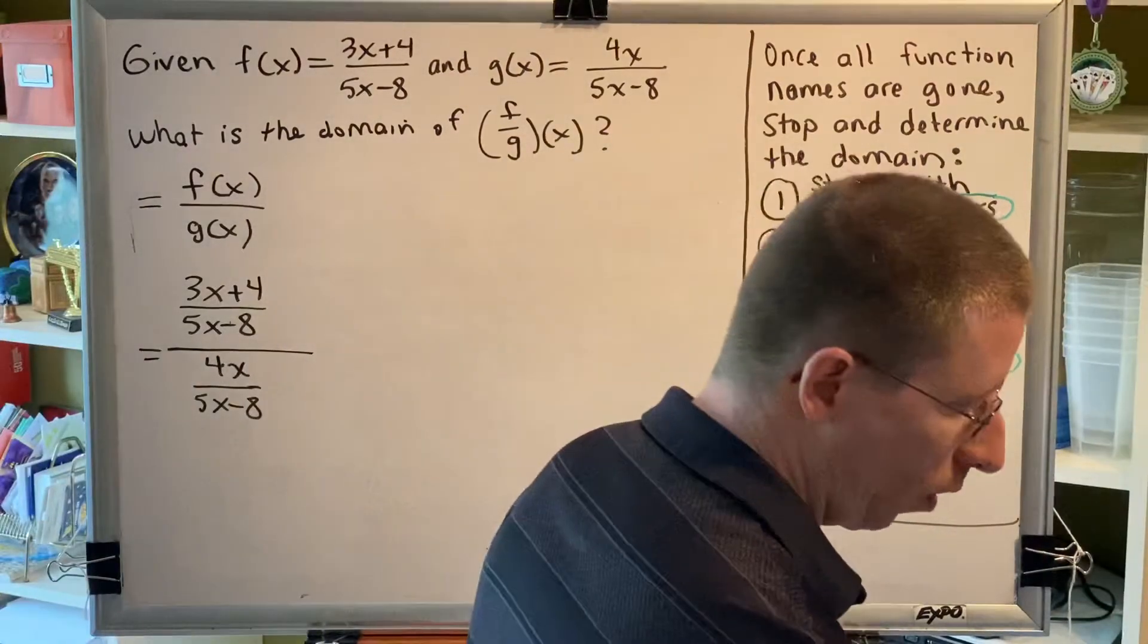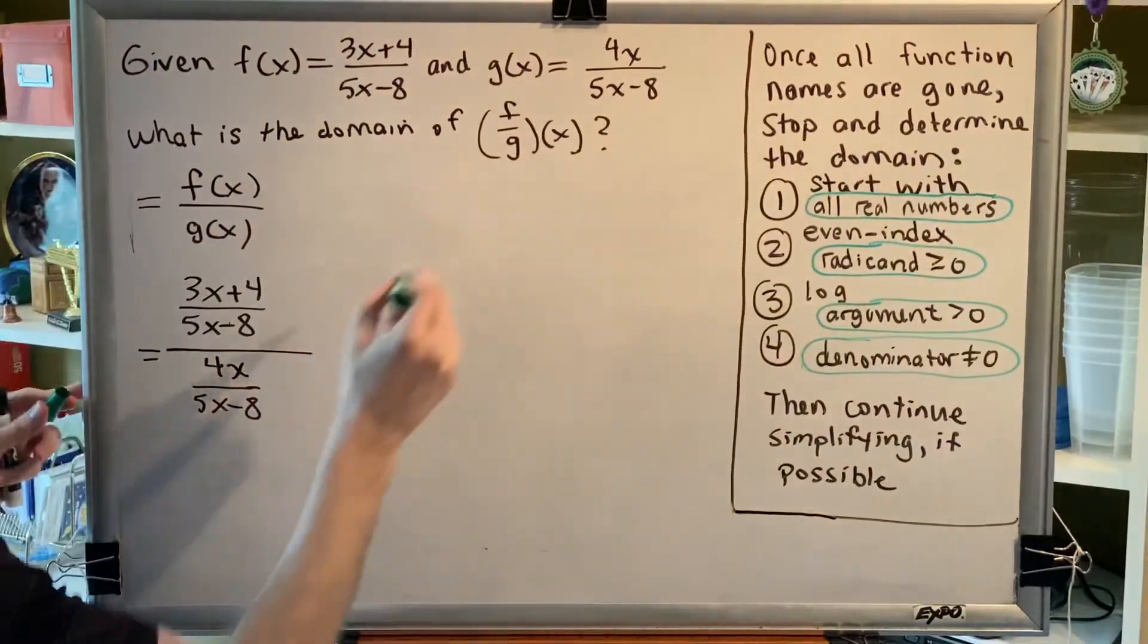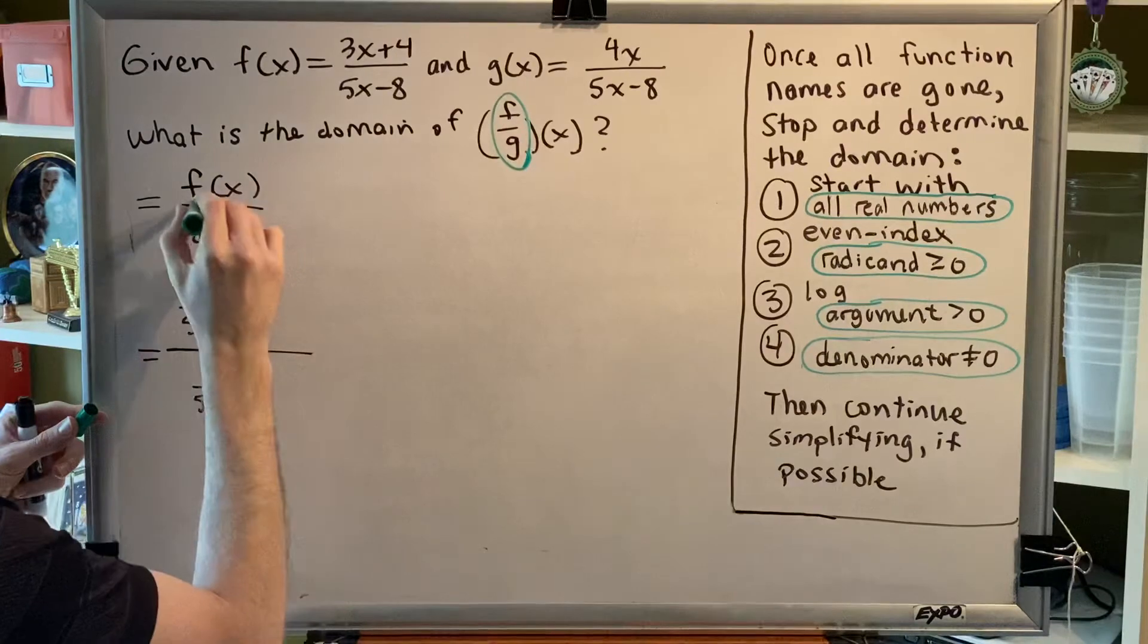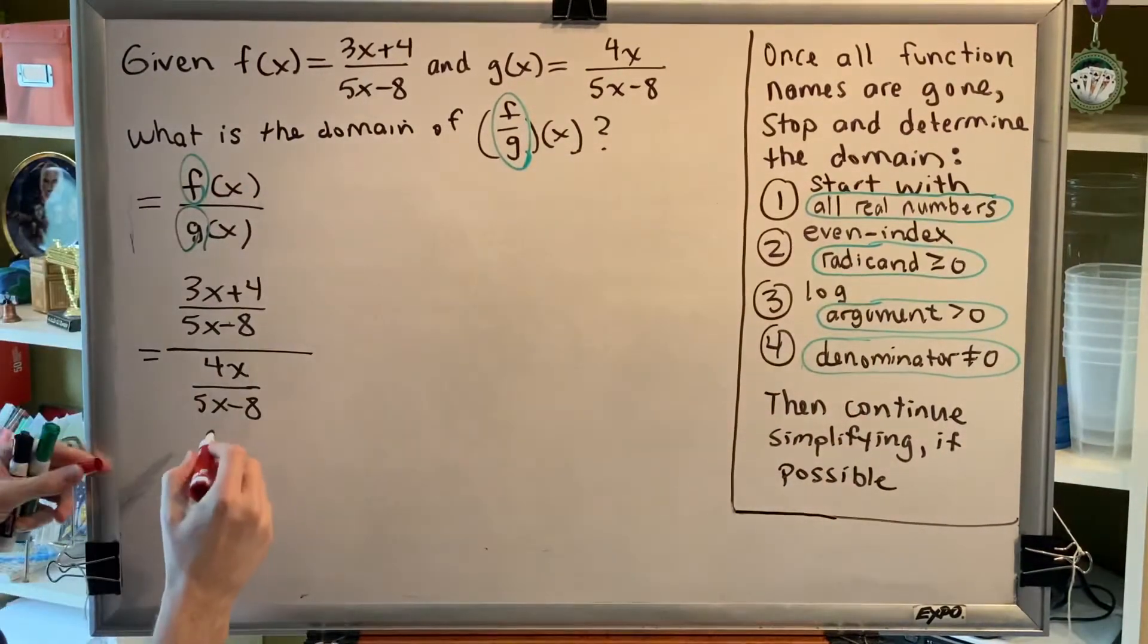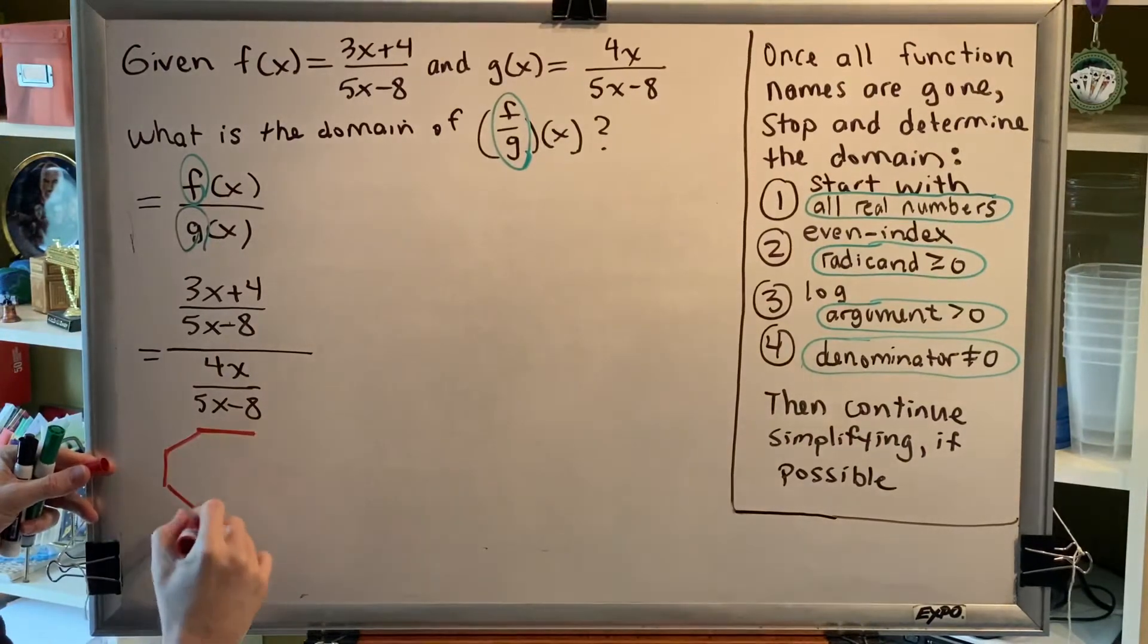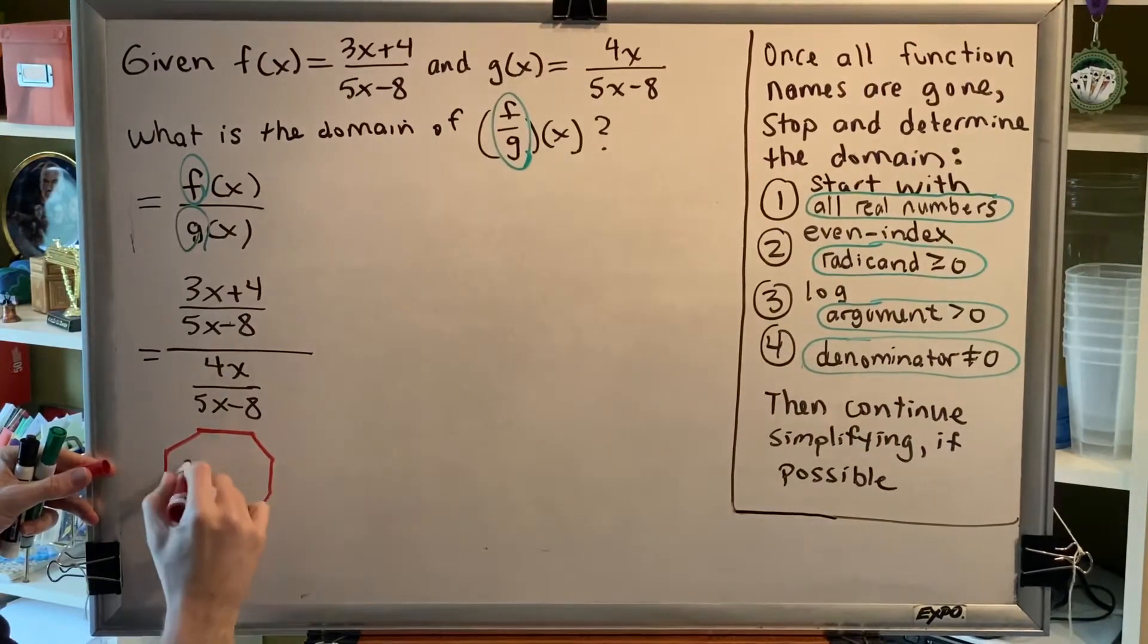This is the first moment in our problem where the function names are no longer part of the problem. We had f and g, but this is the first moment where there's no f, no g. So this is where we stop and determine our domain.